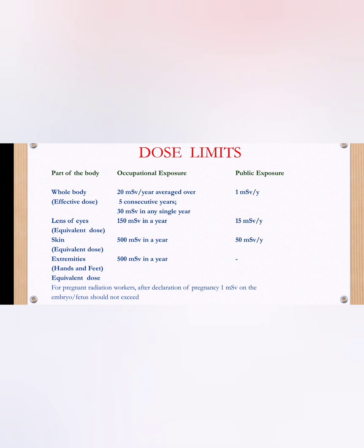Moving on to the lens of the eye: the occupational exposure limit for the eye lens is 150 millisieverts per year for radiation workers. For the public, the eye lens dose limit is 15 millisieverts per year.